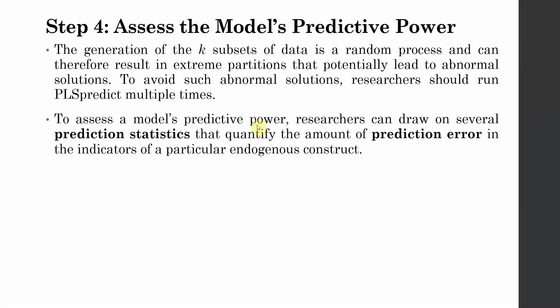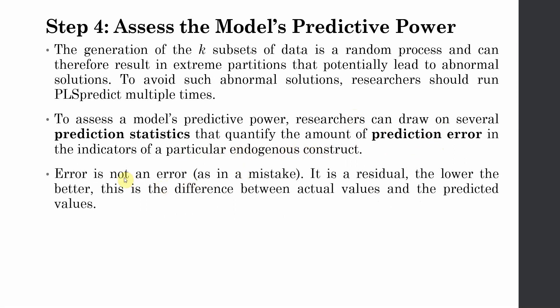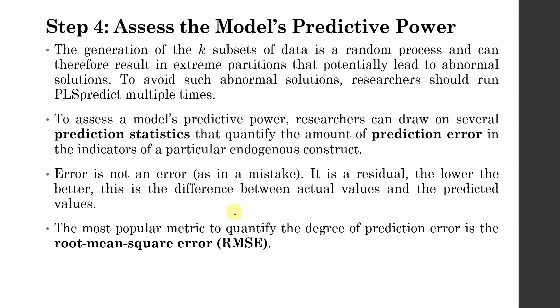To assess a model's predictive power, researchers can draw on several prediction statistics that quantify the amount of prediction error in the indicators of a particular endogenous construct. Error here is not a mistake — it is a residual; the lower it is, the better. This is the difference between your actual values and the predicted values, and you want your error to be minimized — your actual values closer to the predicted values.